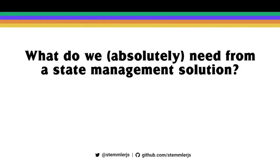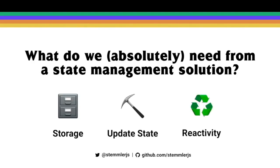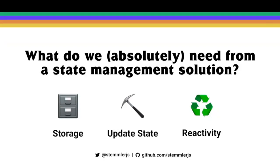The first thing we need is state — somewhere to store data. That may include remote data pulled from a server, local state not on a server, and the ability to combine them on the client side. Then we need to be able to update state. And lastly, we have reactivity — a way to notify parts of our UI that rely on state that it has changed and should present new data.